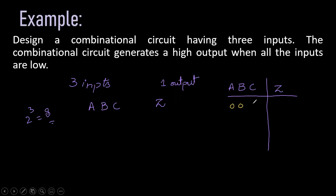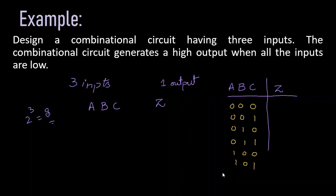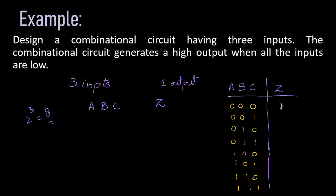We will write the combinations for these three inputs: 0 0 0, 0 0 1, 0 1 0, 1 0 0, 0 1 1, and so on. As we observed, the given case scenario is that whenever all three inputs are low, the output is high. So we will have a high signal when all the inputs are low. Here when C is high, when B is high, or when B and C are high, the output is not high.